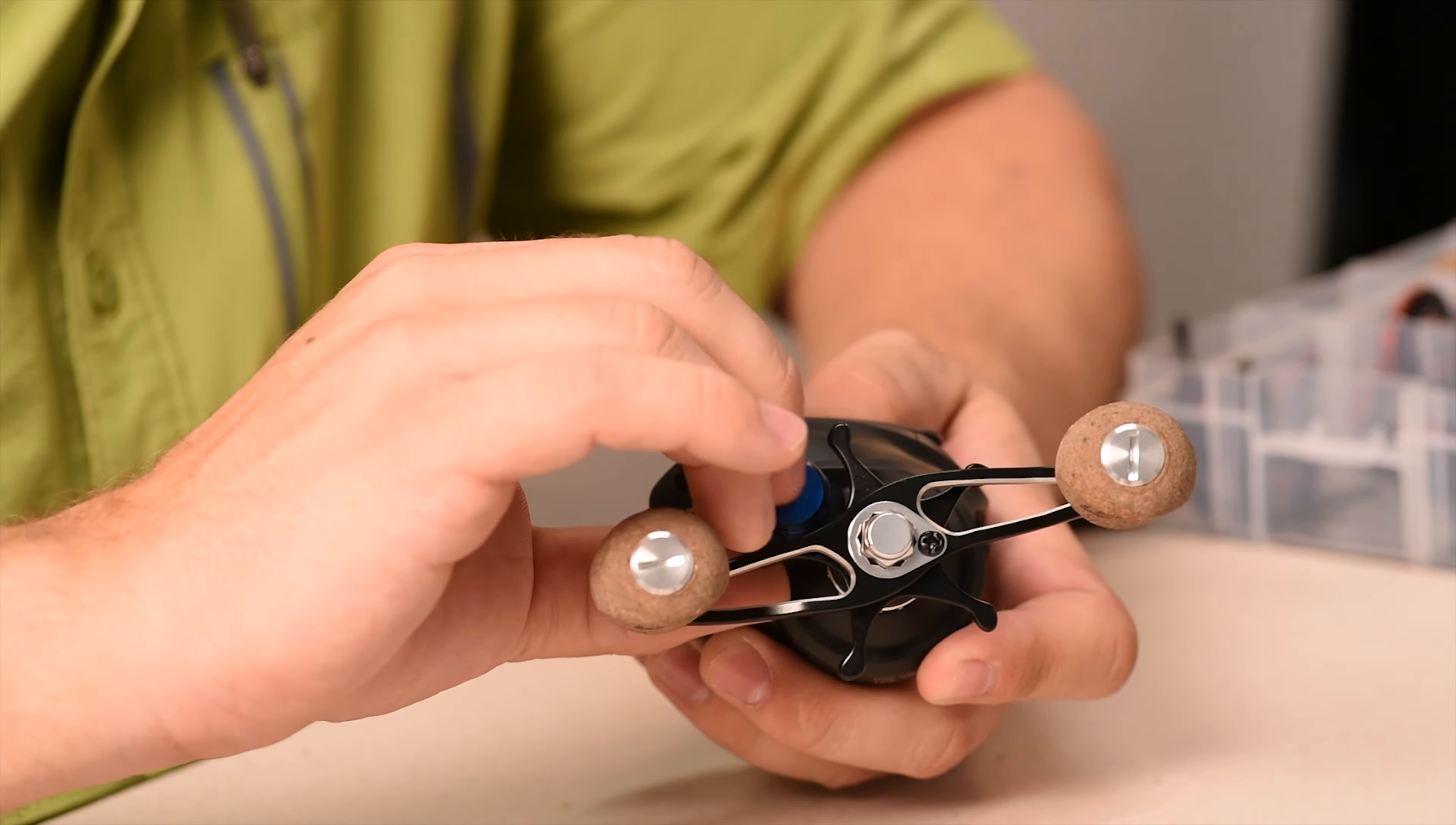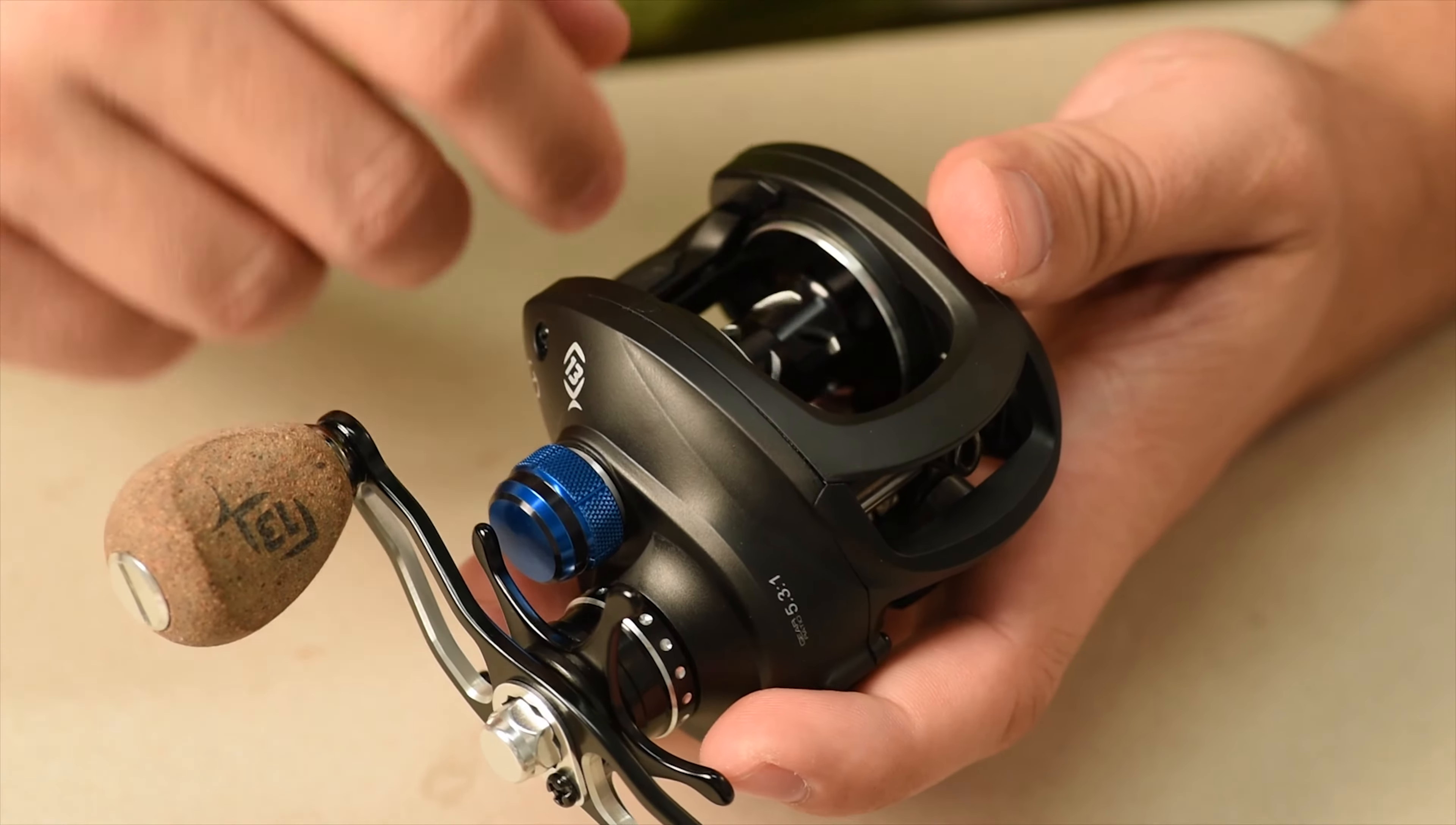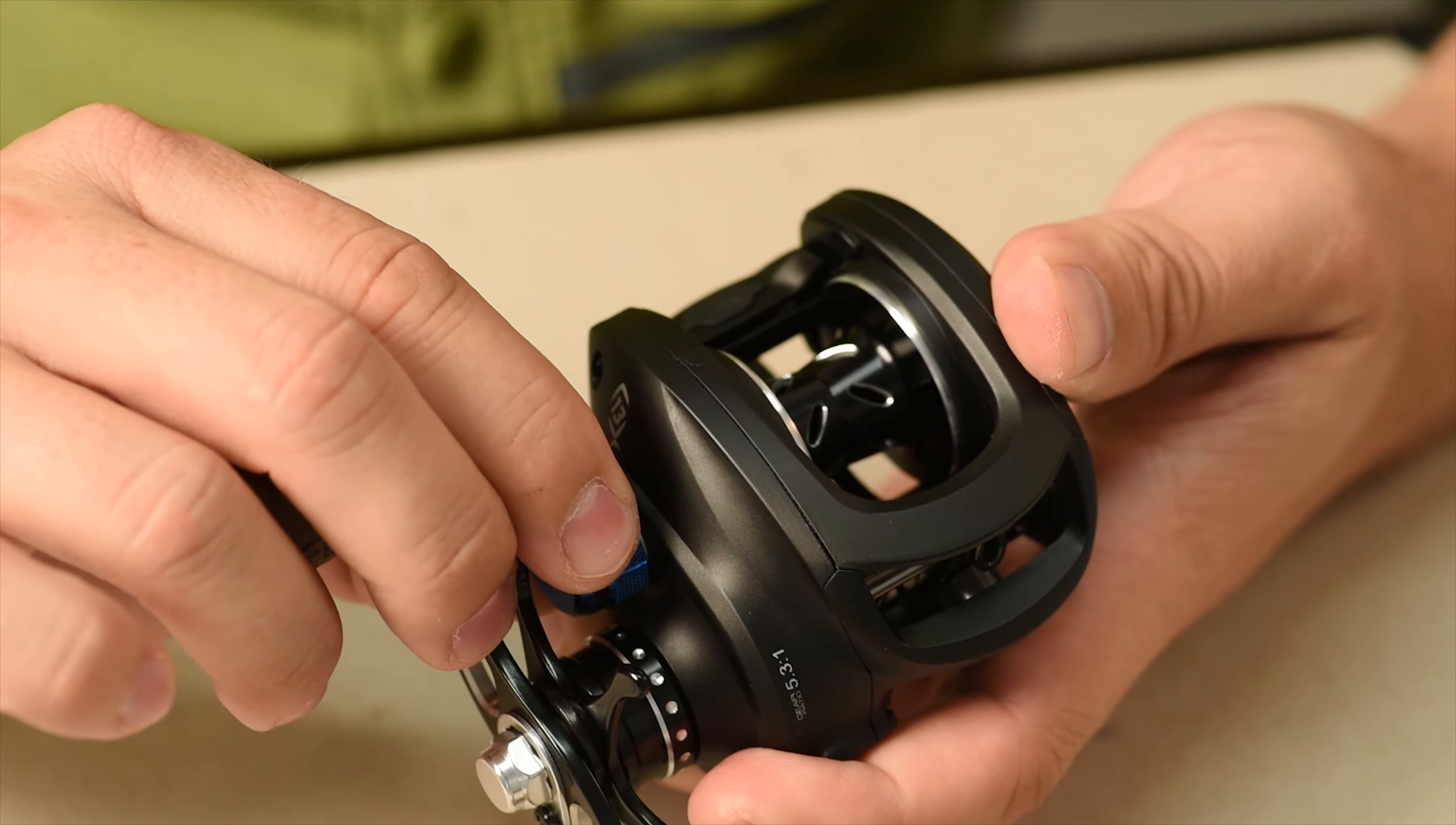Take the new Trick Shop cast control cap and make sure it's positioned the correct way. Carefully turn it clockwise, being sure not to cross-thread it, until it's in position.